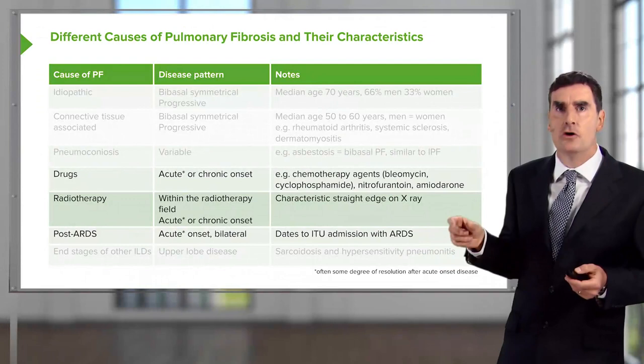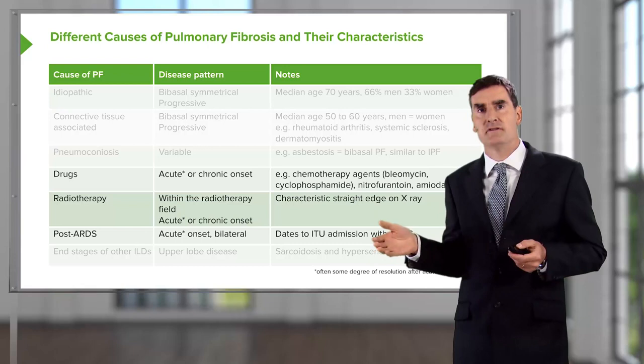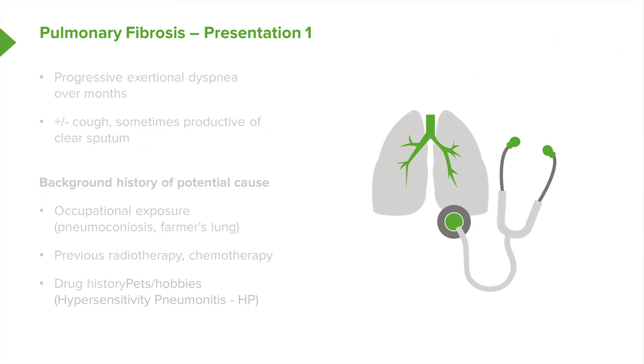There are some causes of pulmonary fibrosis which often start with an acute onset, such as drug toxicity, radiotherapy, and after an episode of adult respiratory distress syndrome.